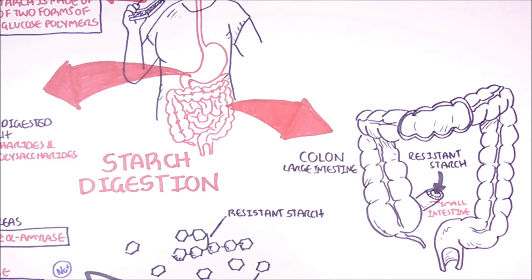The resistant starch will reach the colon after escaping digestion in the small intestine. Now within the colon, the resistant starch will actually undergo fermentation by the gut microbiota.